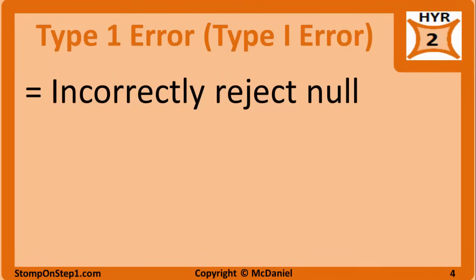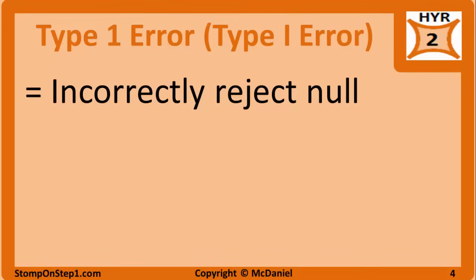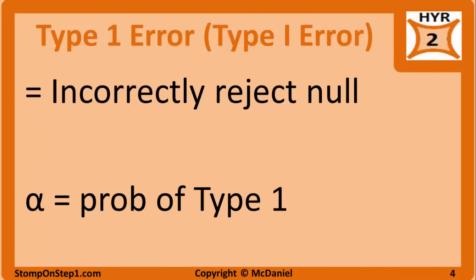Anytime you reject a hypothesis, there is a chance that you made a mistake — you rejected a hypothesis that is true, or failed to reject one that is false. Type 1 error is when you incorrectly reject the null hypothesis. The researcher says there is a difference between groups when there really isn't — it can be thought of as a false positive study result. The probability of making a type 1 error is called alpha. You can remember this by thinking that alpha is the first letter in the Greek alphabet, so it goes with type 1 error.